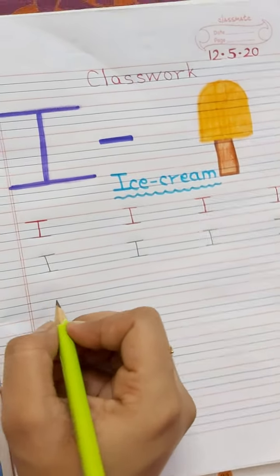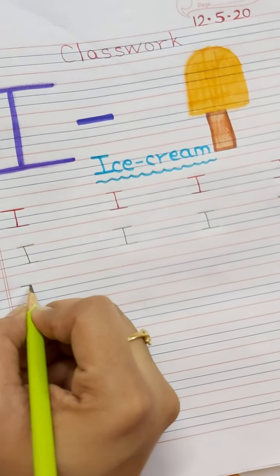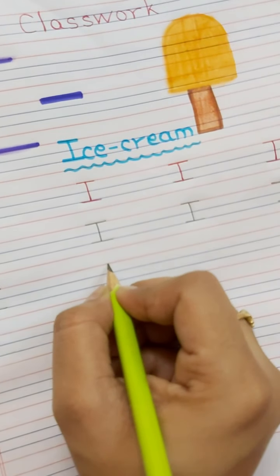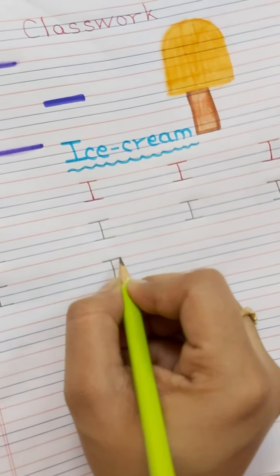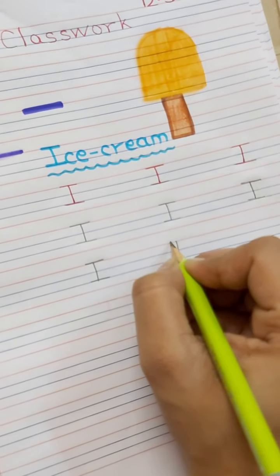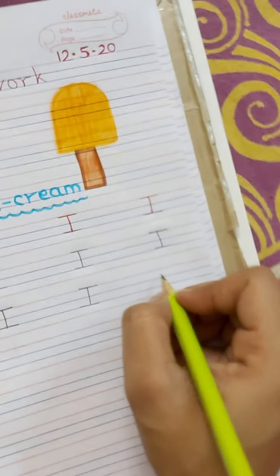Like this, you have to do your work. Again, look here. Standing line, sleeping line, one more sleeping line. Like this, you will write letter I. Standing line, then red line per ek sleeping line, then blue line per ek sleeping line. Niche waali blue line per, okay?